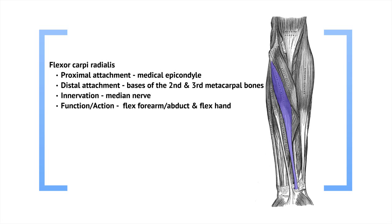Flexor carpi radialis. Its proximal attachment is again the medial epicondyle, and its distal attachment is into the second and third metacarpal bones. Like most of the muscles in the flexor compartment, it's innervated by the median nerve, and its function is to flex the forearm as well as abduct and flex the hand.